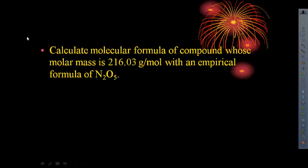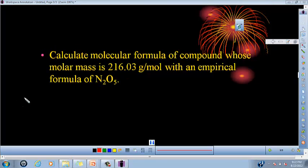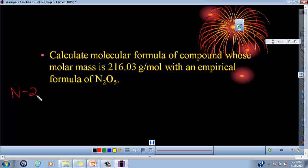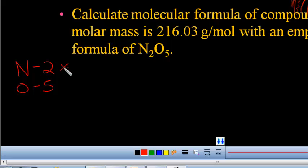Alright. So let's make sense of this. So calculate the molecular formula of a compound whose molar mass is 216.03, and it has an empirical formula of N2O5. Well, hopefully you noticed that that's what we just found the empirical formula of. So we're going to calculate the molar mass of that real quick.